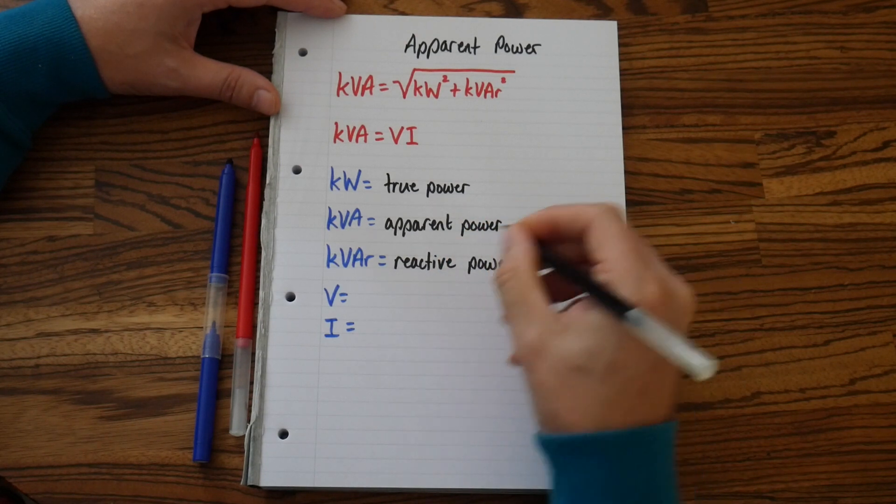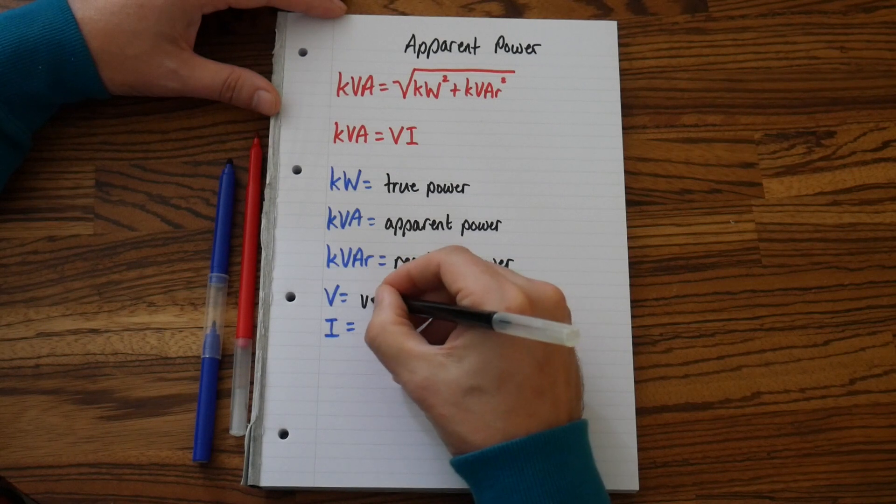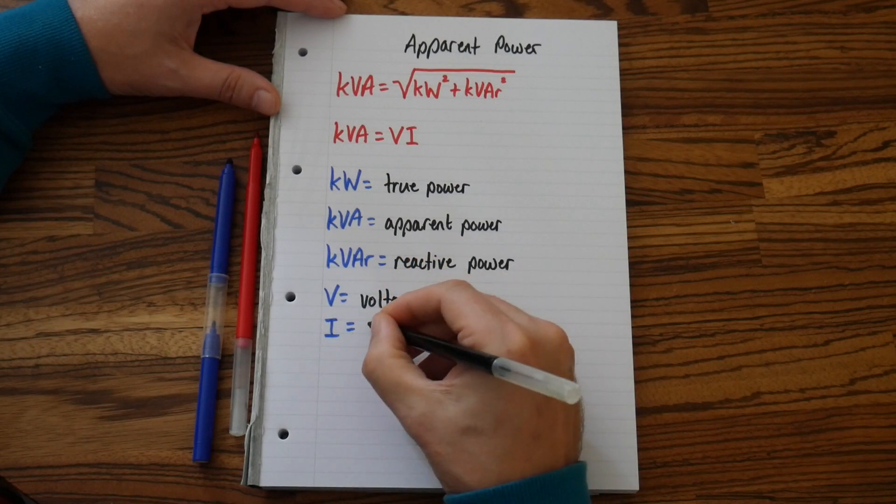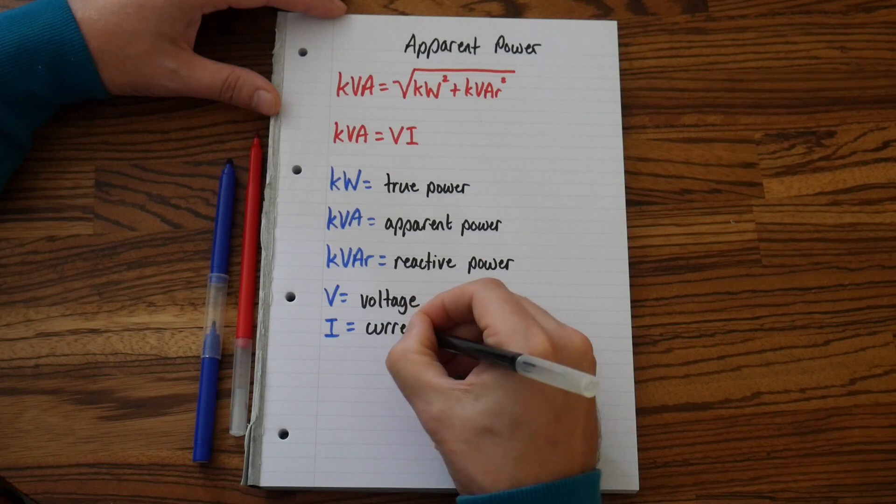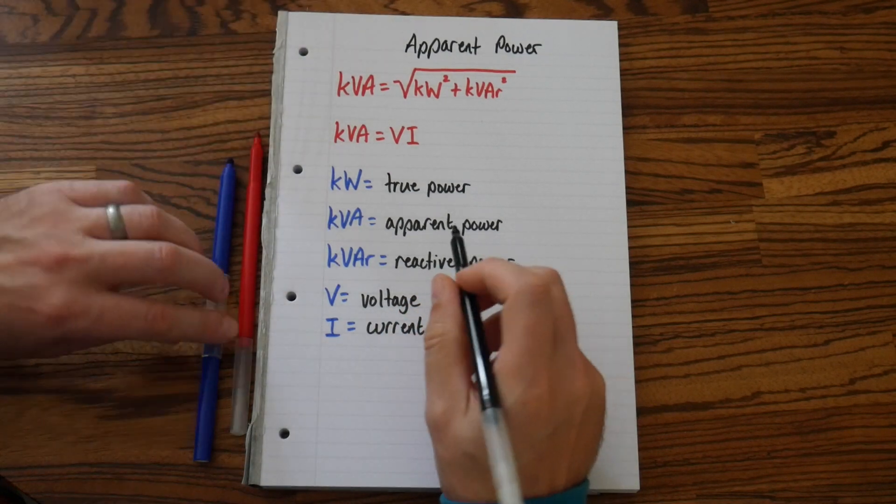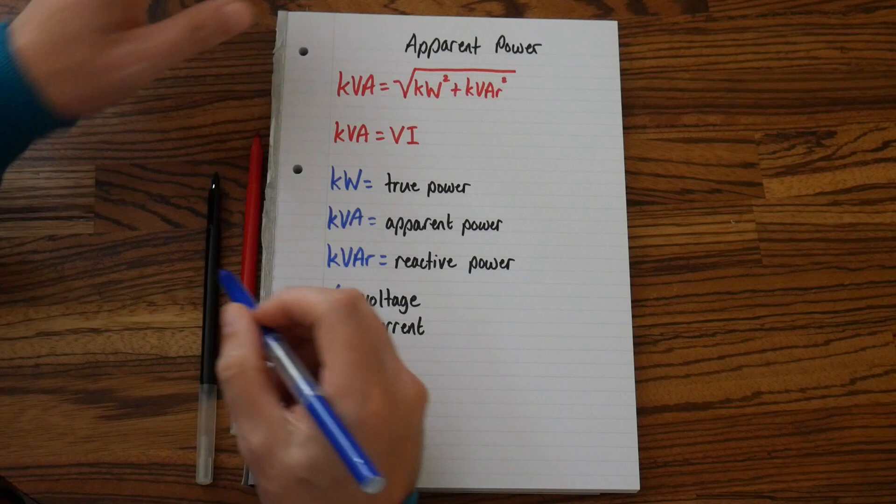V is voltage, and I is current. Now switch pens again.